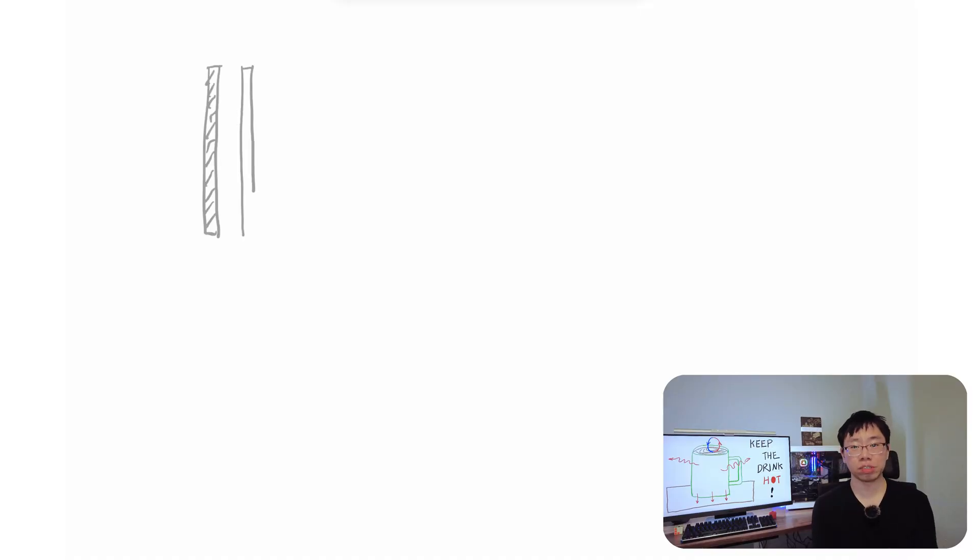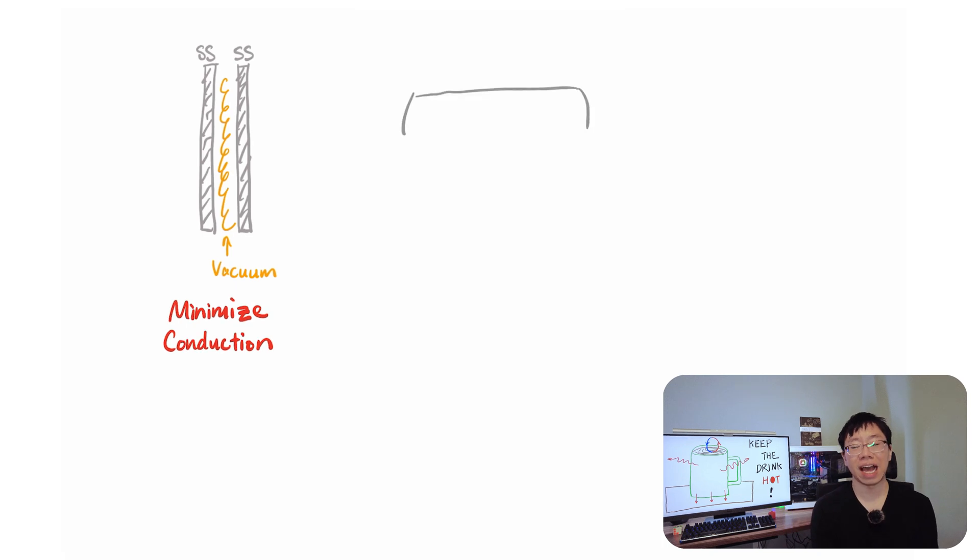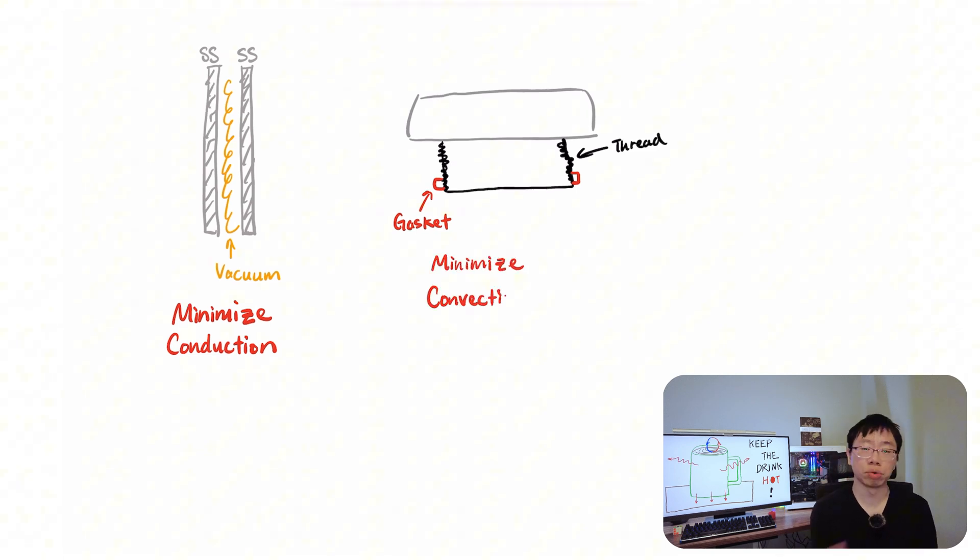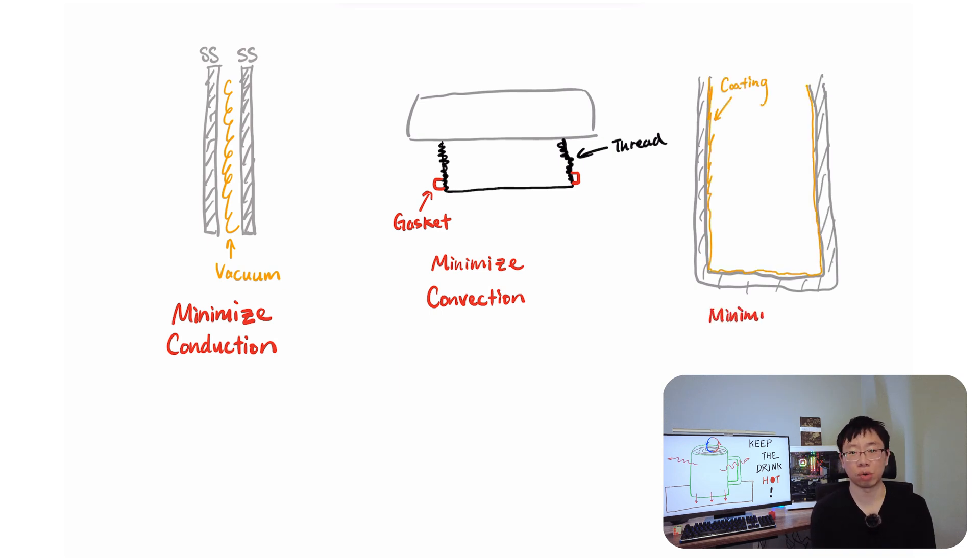So to prevent these three modes of heat transfer, we want to create a vacuum seal between two stainless steel walls to minimize heat loss via conduction. We then need to have a well-designed lid that prevents heat loss via convection. To prevent heat loss through radiation, we would need to apply some type of FDA-approved food grade reflective coating that we could apply to the inner walls of the stainless steel mug.